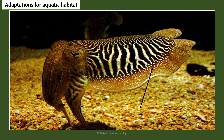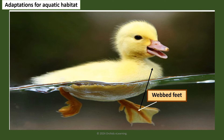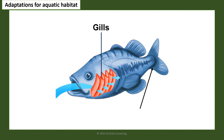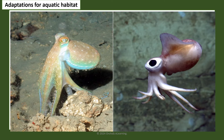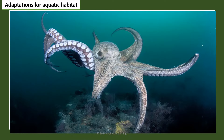Aquatic animals show a variety of adaptations to survive in water. Ducks have webbed feet that help them swim, and they also have hollow bones. Fish have gills to breathe underwater, fins to swim and maintain body balance, and a streamlined body that allows them to swim fast. Some sea animals such as octopus and squid do not have a streamlined shape, but they can make their body streamlined as they move through water.